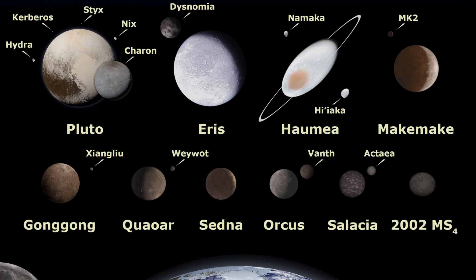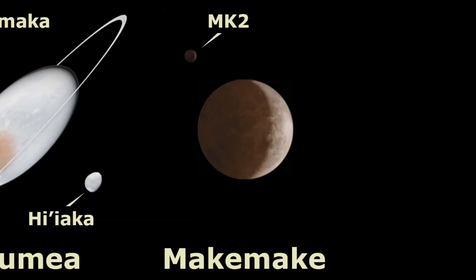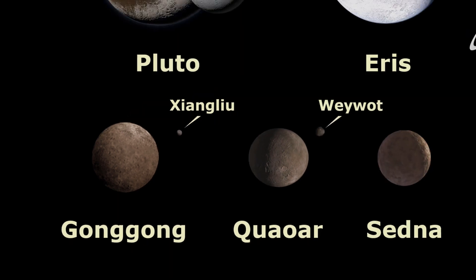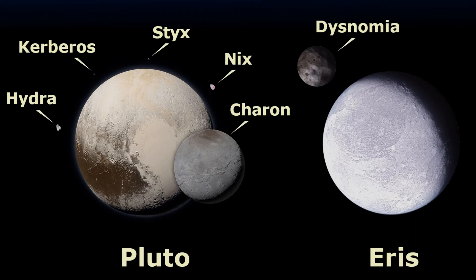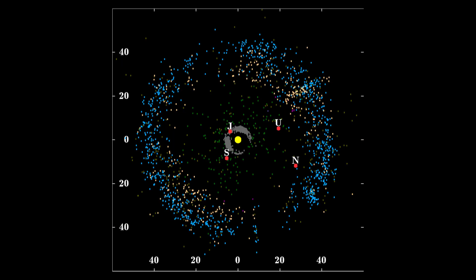There are many other small icy bodies similar to Pluto, such as Haumea, Makemake, and Gonggong. In fact, the dwarf planet Eris is more massive than Pluto. These objects compose what is known as the Kuiper Belt.